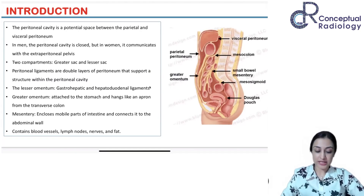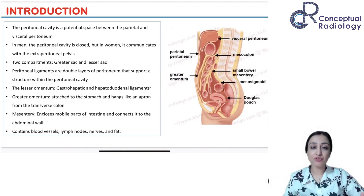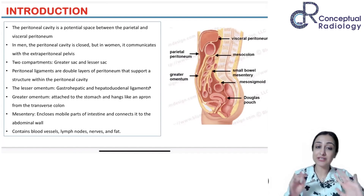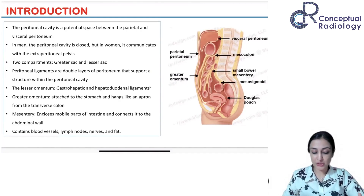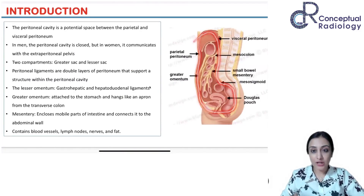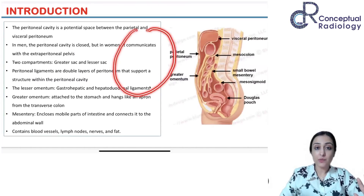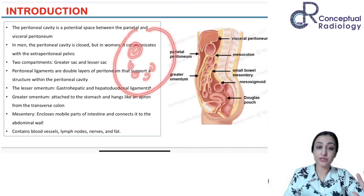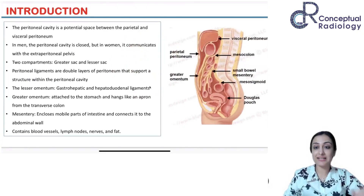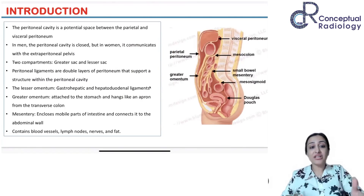This is just the basic stuff. For theory questions you want to remember that there are two layers of the peritoneum: the parietal peritoneum, which is around the body wall, and the visceral peritoneum, which encloses all of the organs. Imagine it like a balloon within a balloon — various organs are floating inside, surrounded by the visceral peritoneum.